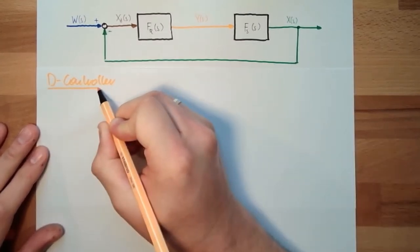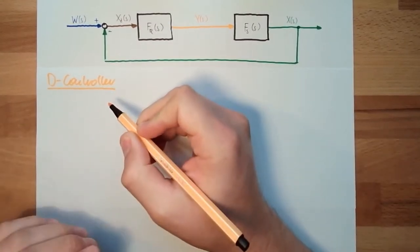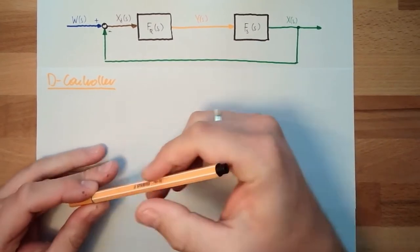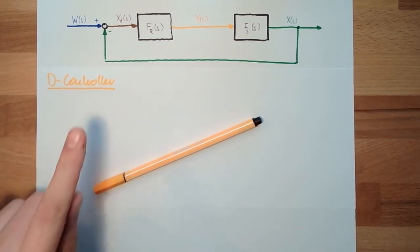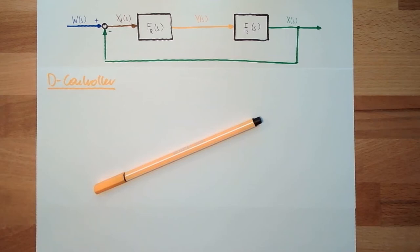What is the transfer function of a D-controller? The transfer function of a P-controller was P-element, the transfer function of an I-controller was an I-element. The transfer function of a D-controller must be D-element, right? Baaah, wrong.